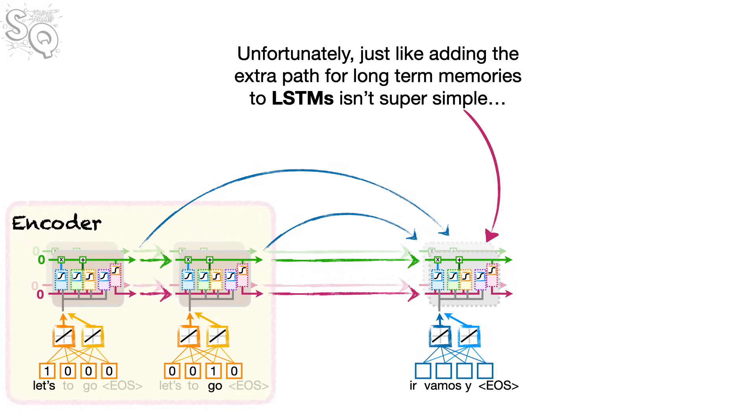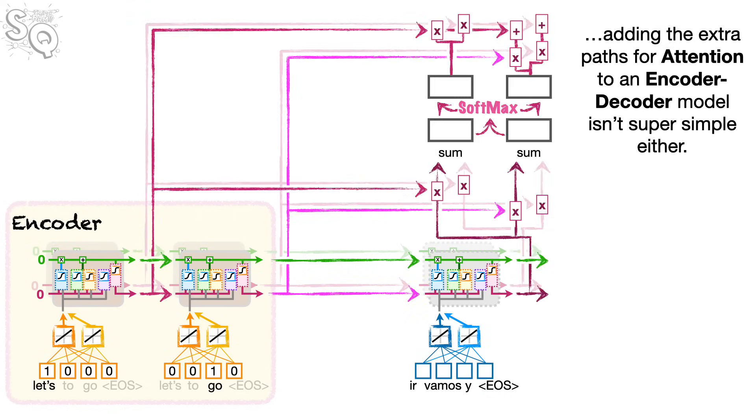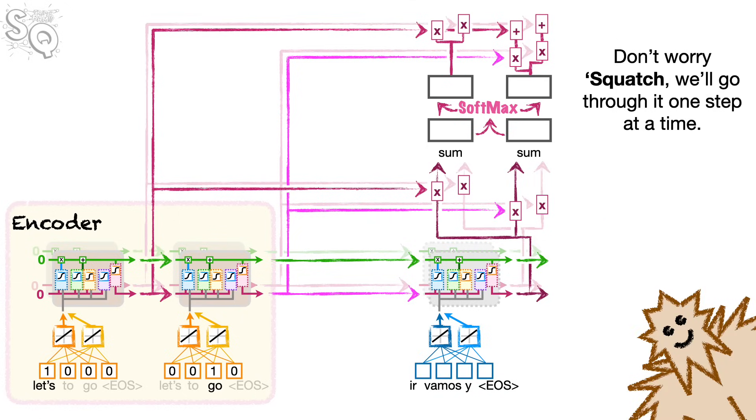Unfortunately, just like adding the extra path for long-term memories to LSTMs isn't super simple, adding the extra paths for attention to an encoder-decoder model isn't super simple either. Ugh! Don't worry, Squatch. Don't worry, we'll go through it one step at a time. Bam!